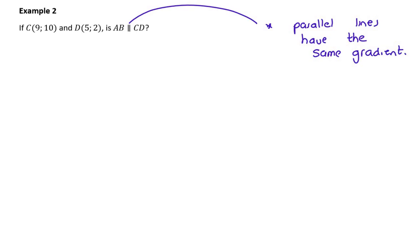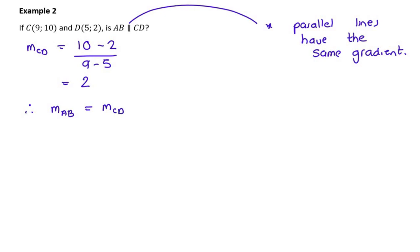Are these lines parallel? I first need to find the gradient of CD, which is 10 take away 2 over 9 take away 5, which is 8 divided by 4, which is 2. If they ask you to show or prove they're parallel, you can't just say 'yes' — you need to make a conclusion: the gradient of AB equals the gradient of CD, therefore AB is parallel to CD. You must always show an argument towards that conclusion.